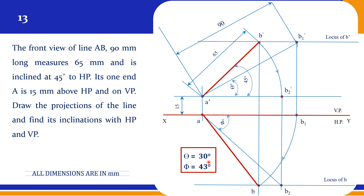Theta and phi are the true inclinations we need to find — I am getting 30 degrees and 43 degrees. Please try to solve this and you should get the same answer — you can cross check. So when the front view distance is given, we can proceed in this way to solve the problem. There will be different ways; we have to find the right way, and for one problem there might be different solutions also.